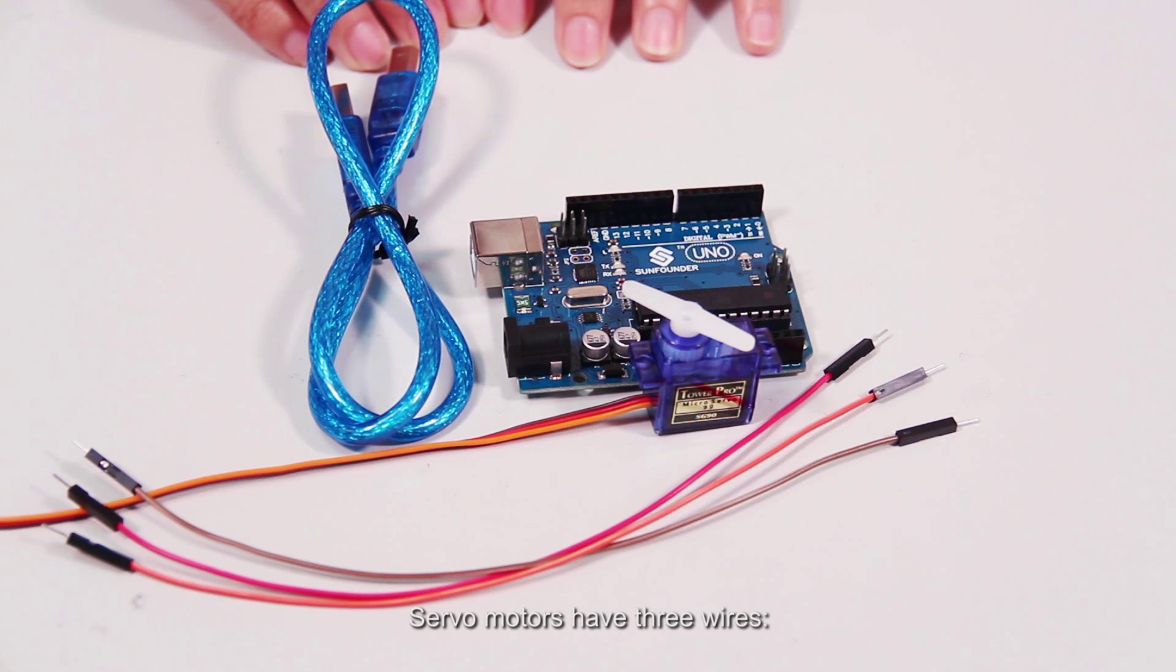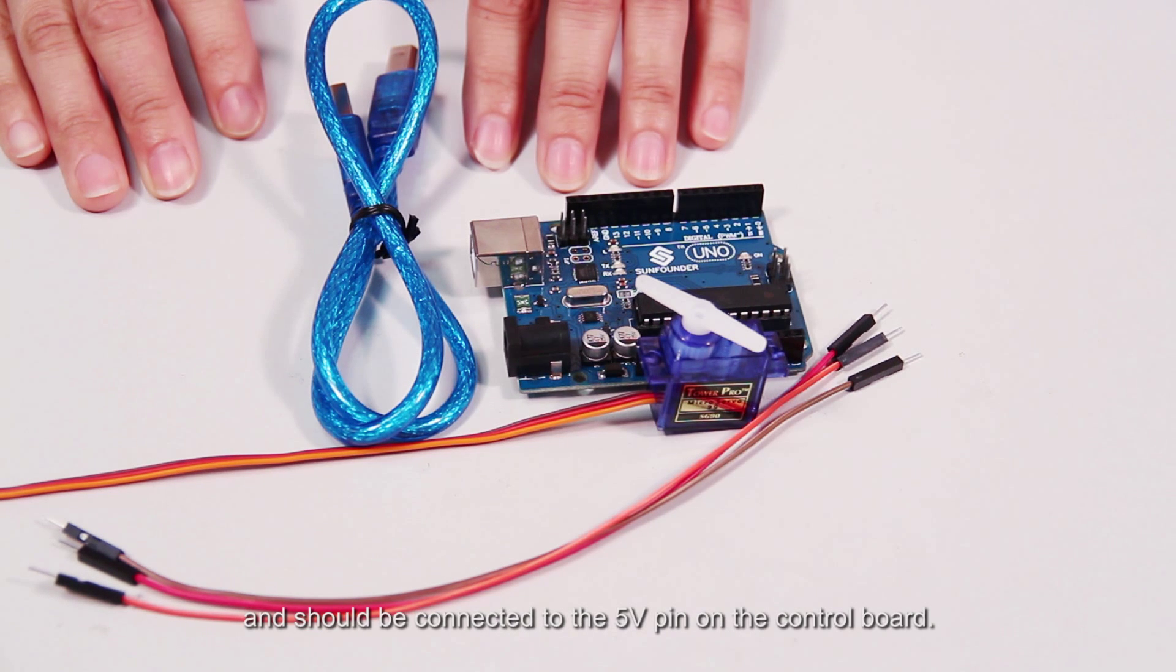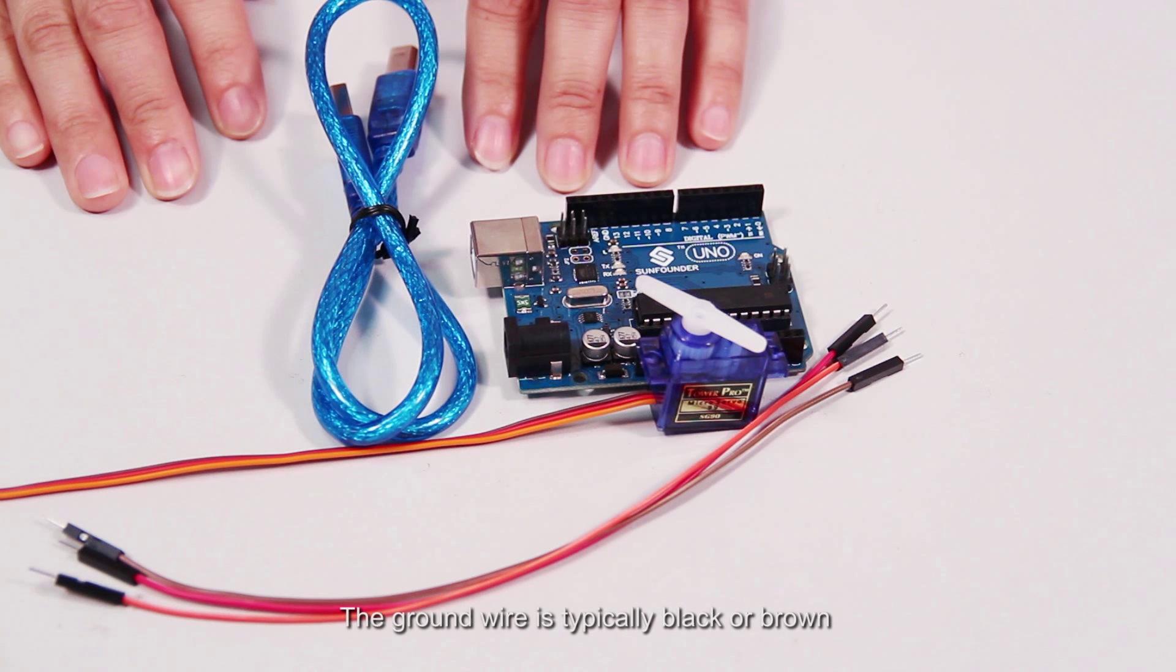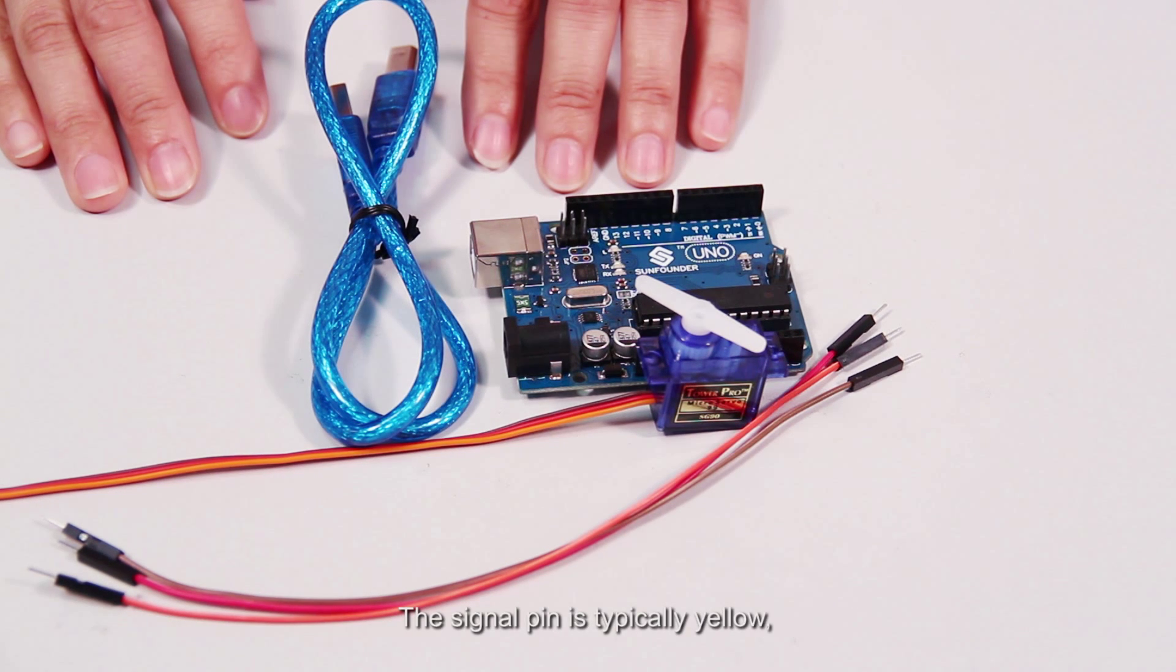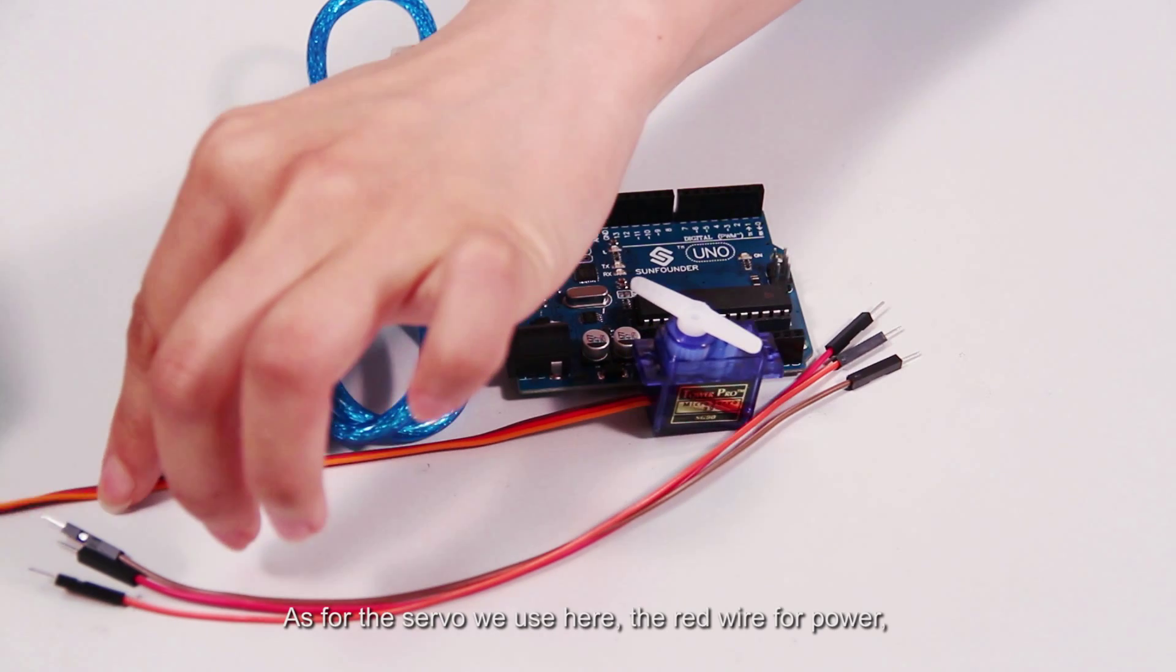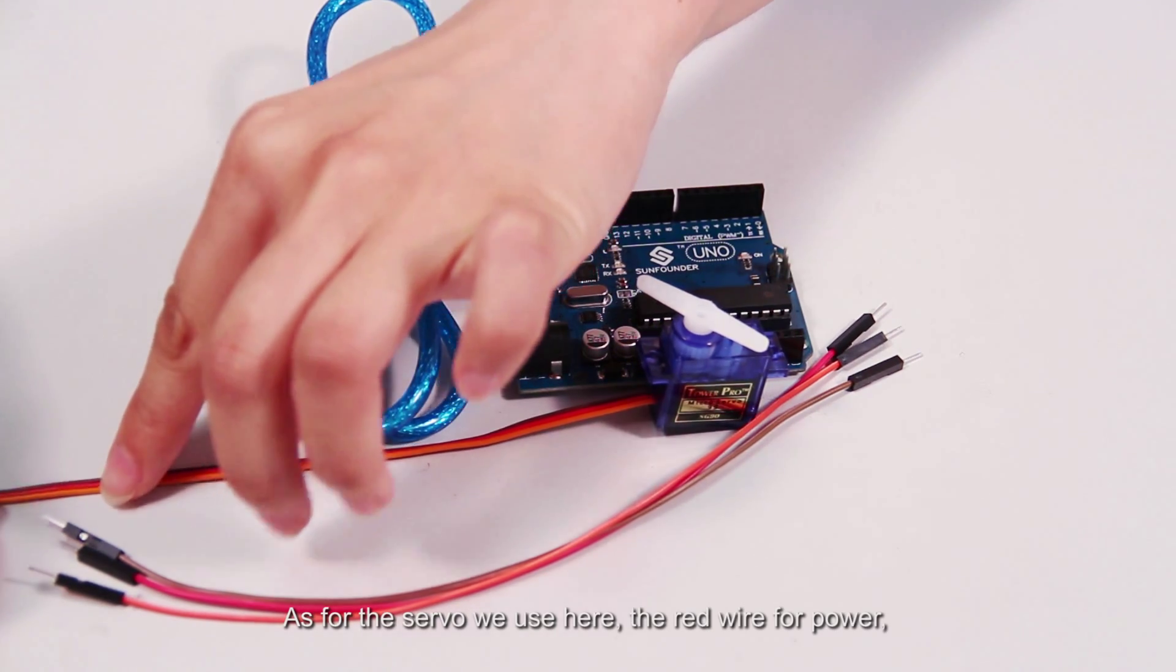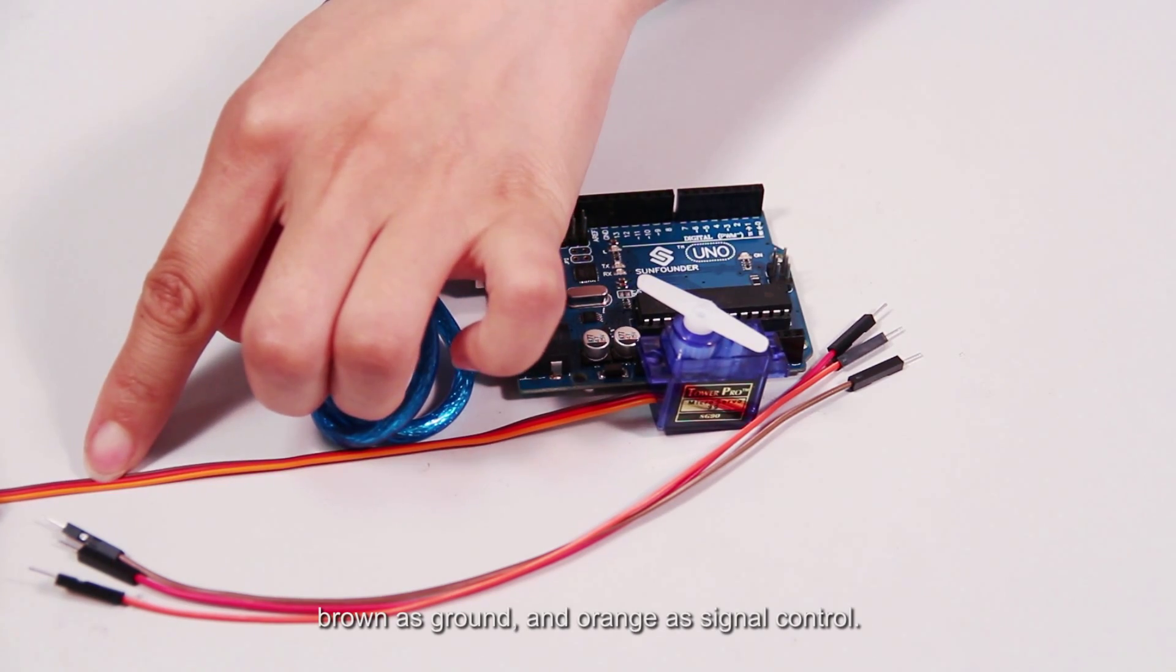Servo motors have three wires: power, ground and signal. The power wire is typically red and should be connected to the 5-volt pin on the control board. The ground wire is typically black or brown and should be connected to a ground pin on the Arduino board. The signal pin is typically yellow, orange or white and should be connected to a digital pin on the board. As for the servo we use here, the red wire for power, brown as ground and orange as signal control.